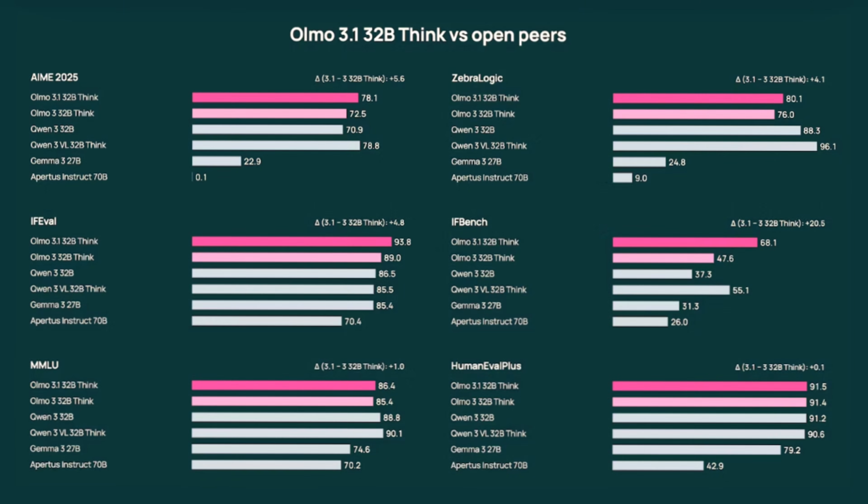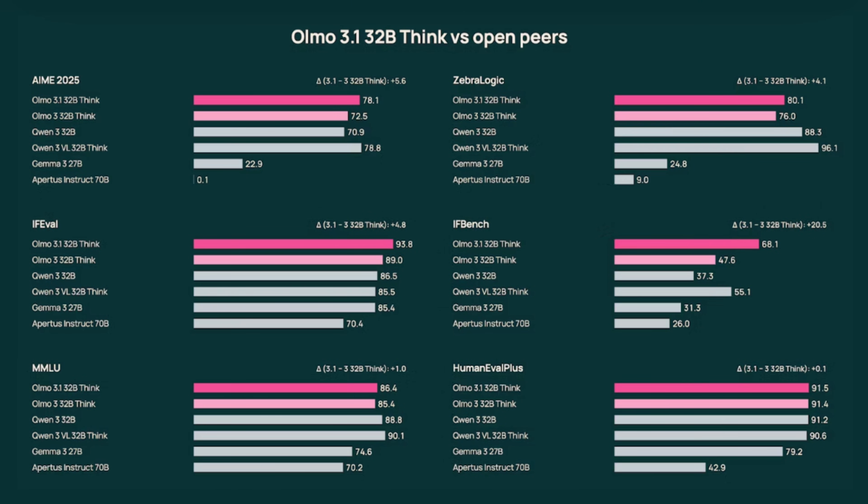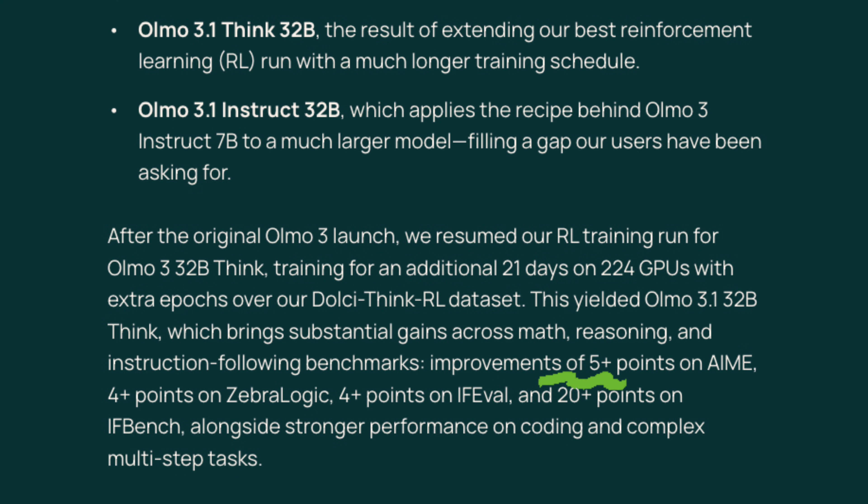Performance-wise, for open source, it's strong. The Think 32B is the strongest fully open reasoning model out there. On math it hits about 96%, and on HumanEval+ it's around 91% — though take those with a grain of salt. ULMO 3.1 takes it further with about plus-five on AIME and big jumps on instruction following and hard reasoning benchmarks. It's trained on way less data than Qwen3, but it's still neck-and-neck in reasoning and code. If you're building agents or reasoning tools, this is the kind of model you actually want to test.